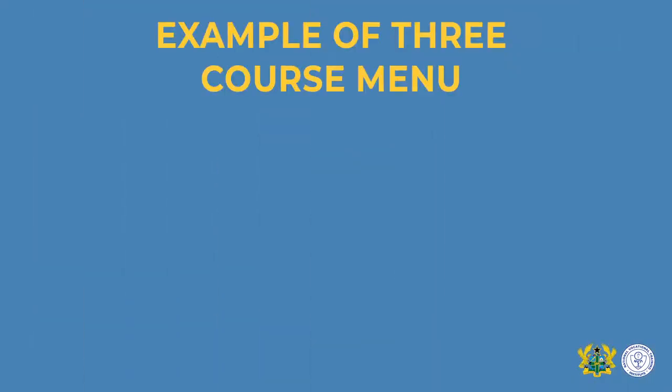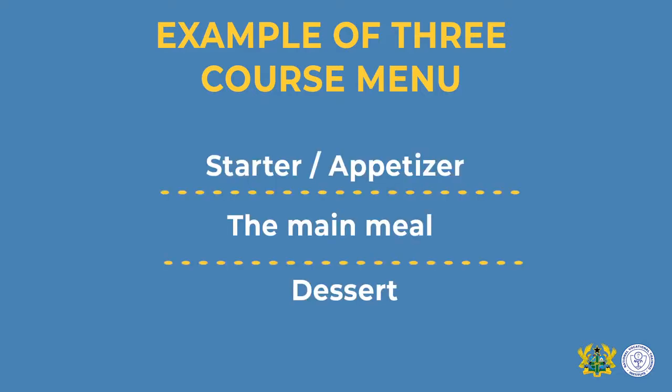The example will be based on a three-course meal: a starter, main meal, and then dessert — which can include an orange pancake.